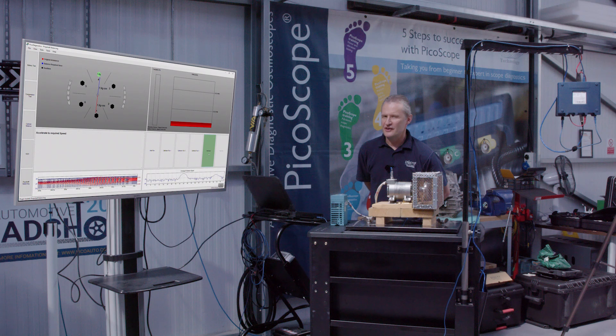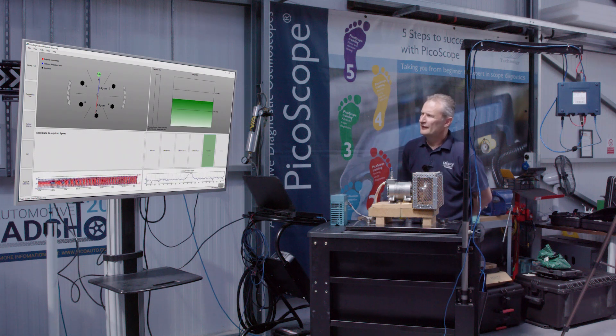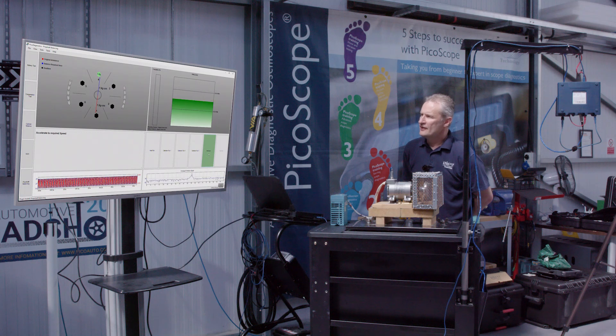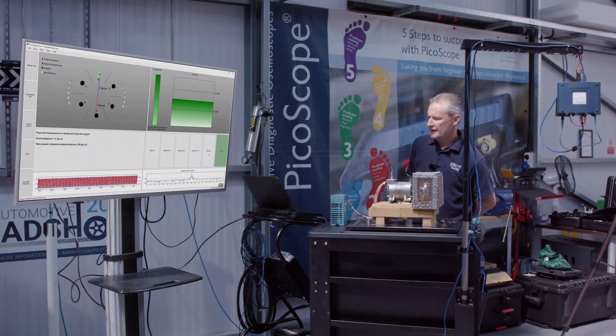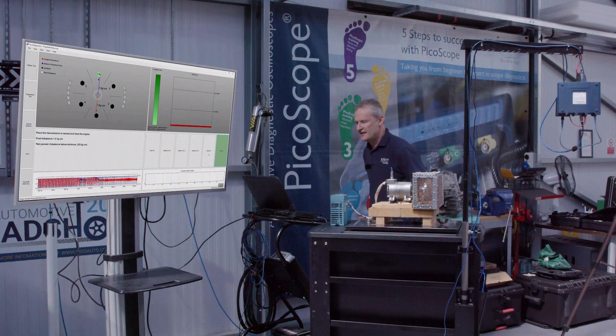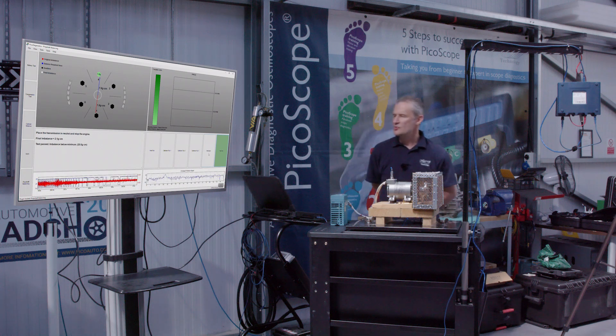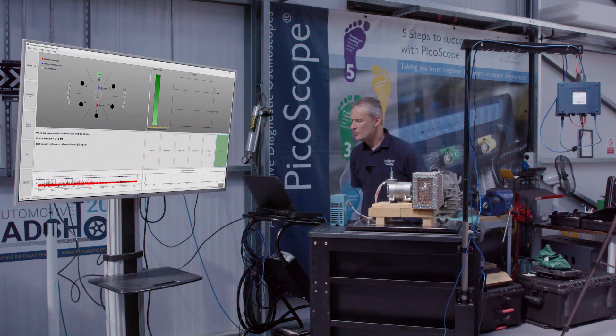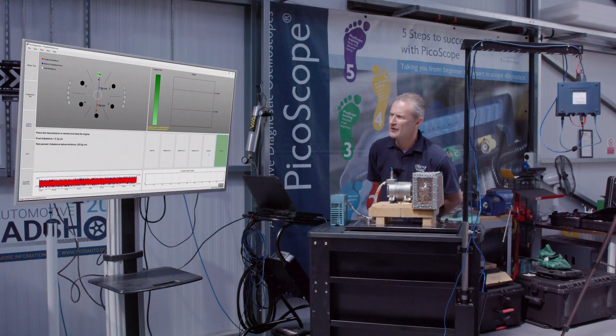I think that speaks for itself, doesn't it? Just from a noise level. There we go. So, again, we've hit the sweet spot. There's our measurement window. And let's see what results we acquire here. Well, that's good news. The test has passed. The target imbalance was anything below 20 gram centimeter. And we achieved a final imbalance of 2.1 gram centimeter. So, there is our propshaft balance procedure carried out thoroughly.